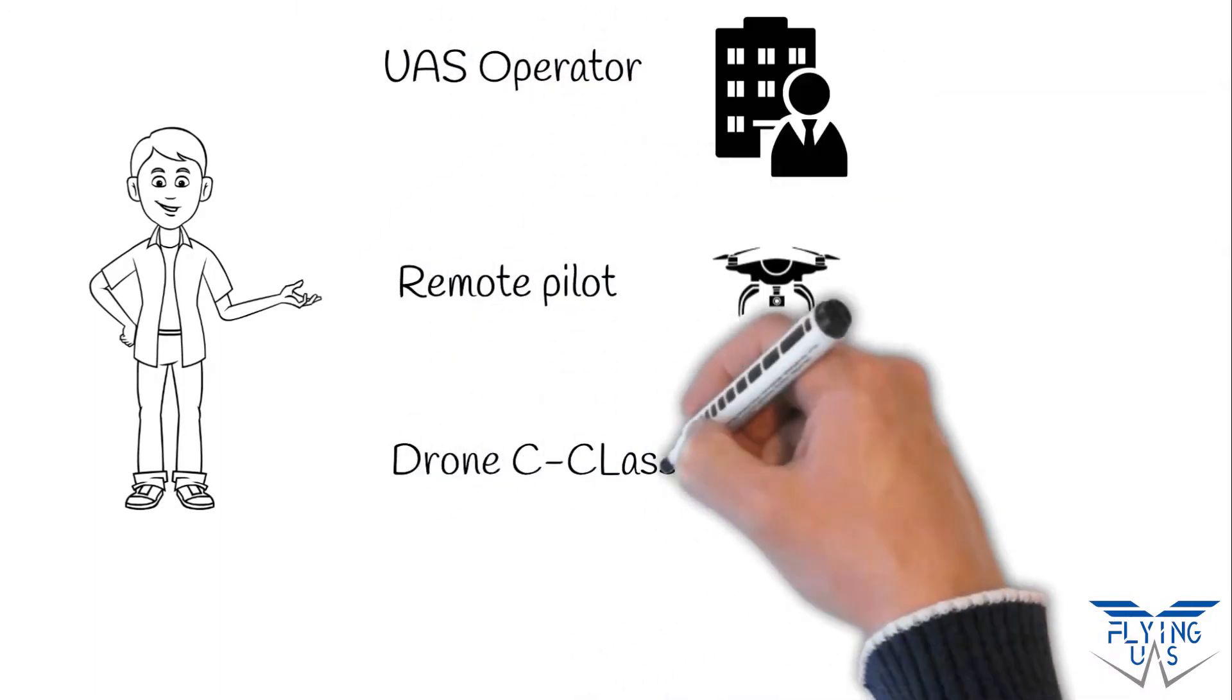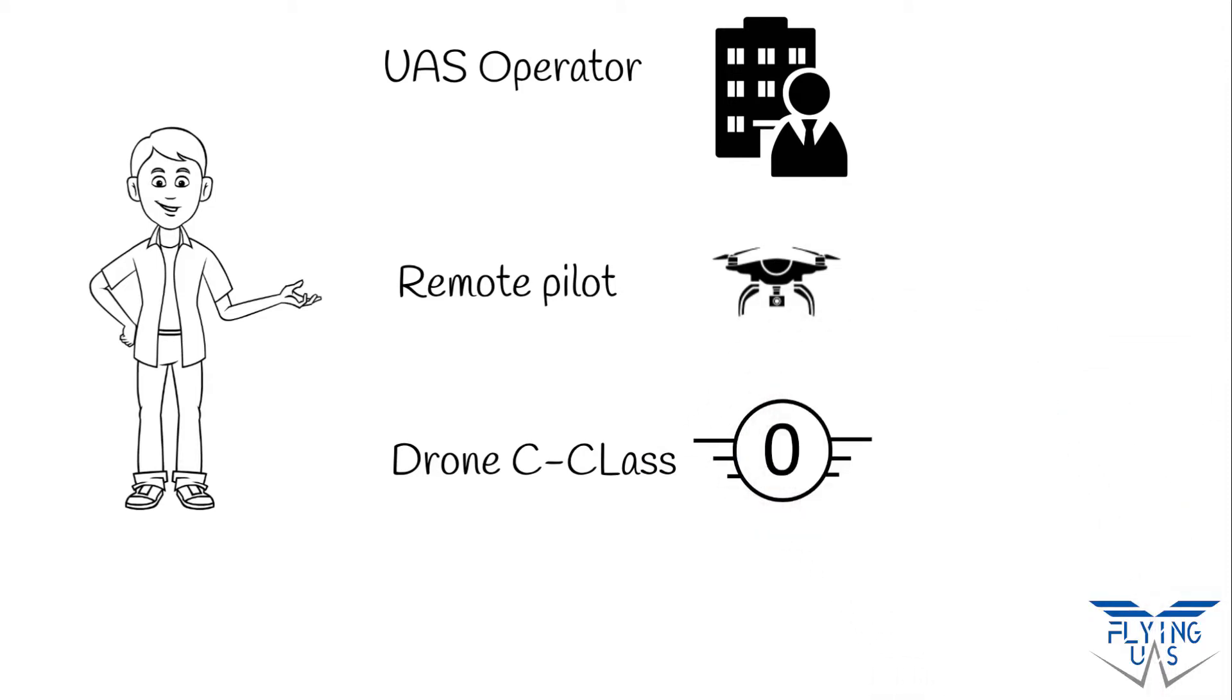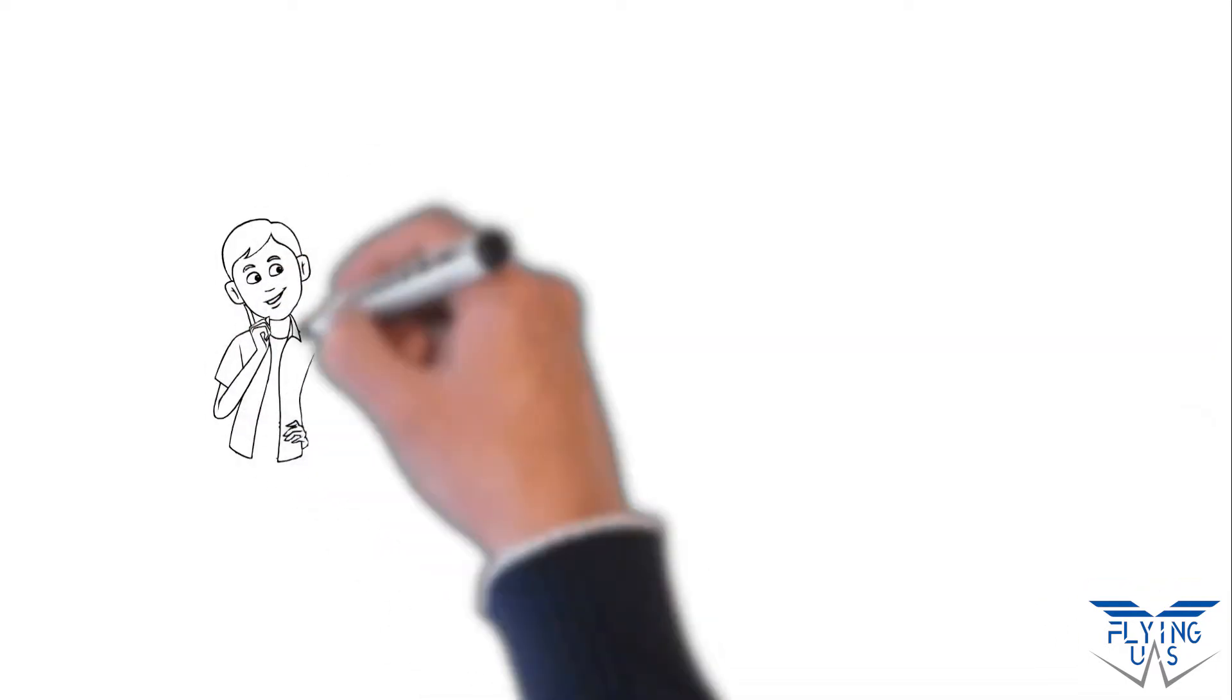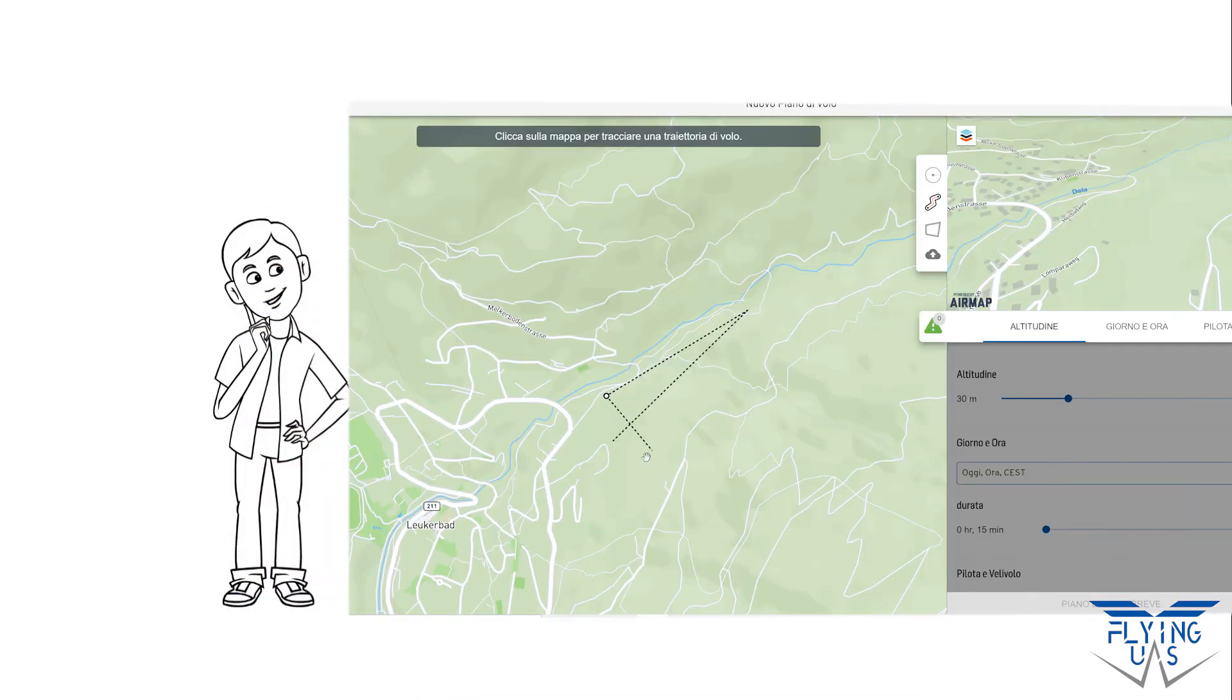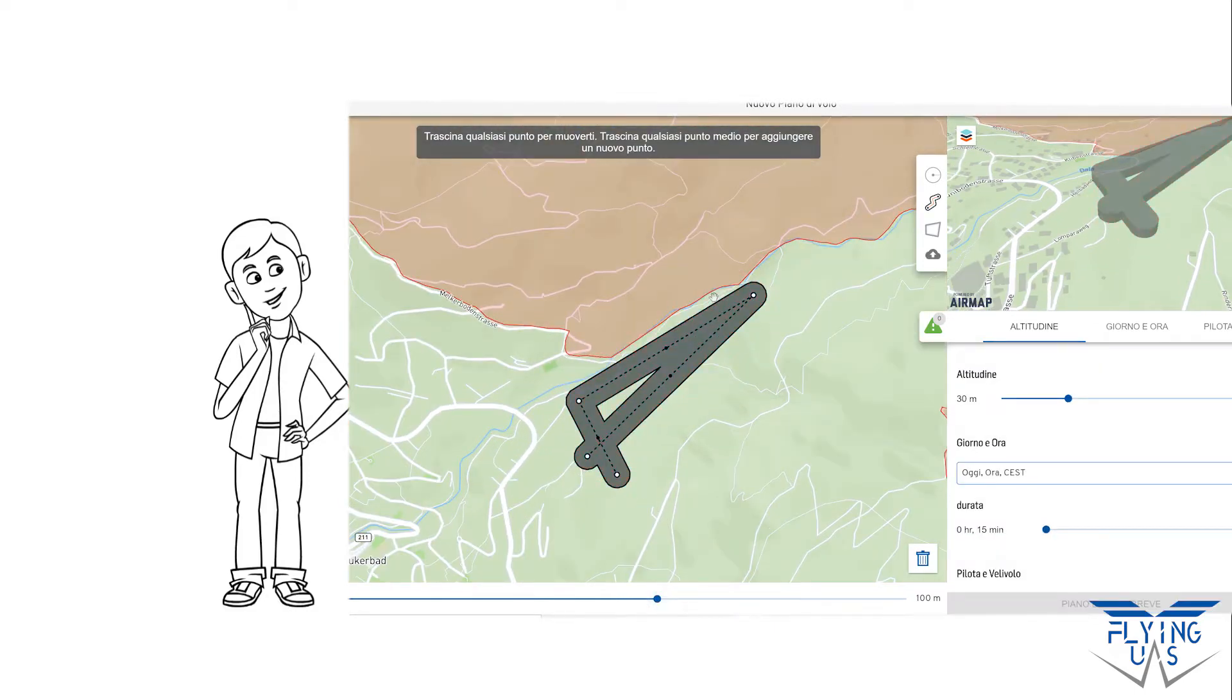Before starting to discover the open category, let's see three fundamental notions: UAS operator, remote pilot, and C-class of a drone. The UAS operators are those entities that plan, commission, and coordinate the mission. He decides in which category the mission falls.